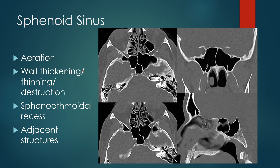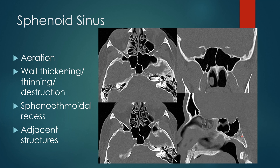For the sphenoid sinus, you discuss the degree to which it is aerated, whether it contains fluid with a fluid level or meniscus, whether there is mucosal thickening or polypoid focal mucosal thickening, and you evaluate for wall thickening, thinning, or destruction. The sphenoethmoidal recesses are difficult to see, but there is drainage of the sphenoid sinus into the posterior ethmoid air cells, so significant sphenoid sinus disease is often associated with posterior ethmoid sinus disease. Remember, when you have a disease process involving the sphenoid sinus, you have very important adjacent structures at risk: the internal carotid arteries, the sella — which is intimately associated with the sphenoid sinus — the clivus, and the basilar artery sitting right behind the clivus.